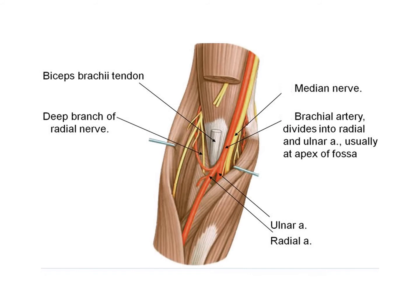In this picture we can see details of the contents. The most medial structure is the median nerve, which gives a branch to pronator teres. It leaves the cubital fossa by passing between the two heads of pronator teres: the humeral head and the ulnar head. The brachial artery divides into the ulnar artery, which is more deeply placed, and the radial artery. The radial artery leaves by passing deep to the apex, while the ulnar artery leaves deep to the ulnar head of pronator teres. The ulnar head of pronator teres separates the median nerve from the ulnar artery. A branch of the radial artery visible here is the radial recurrent artery.